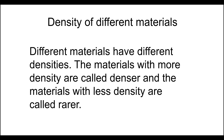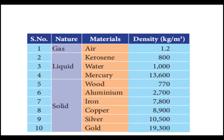Different materials have different densities. The materials with more density are called denser and the materials with less density are called rarer. Different materials possess different density. When you compare gas, liquid, and solid, the density of gas is very very less. For example, kerosene is 800 and air is 1.2 kilogram per meter cube.